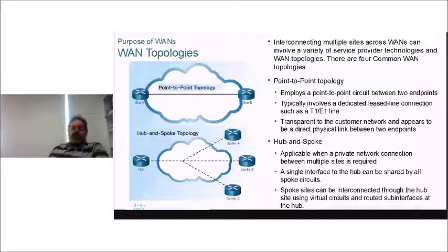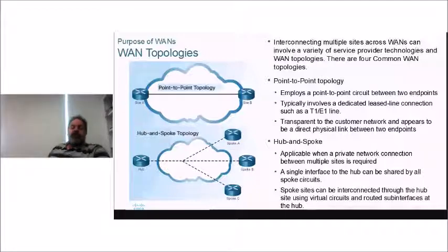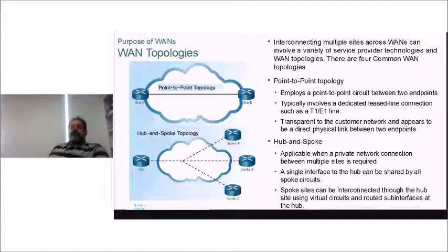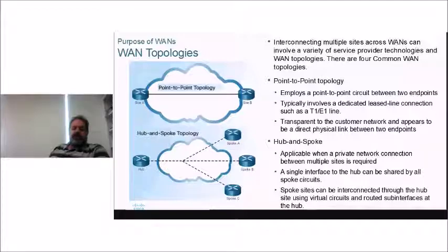We draw the cloud because it's all quite complex and we really don't need to know what the telco does in the middle. With hub and spoke topology, the hub is the central or main office and the spokes are all the other campuses. You could have point-to-point links from the main site to all other sites, but that requires a different physical connection for each site. Hub and spoke lets you use smarter setups like frame relay with a single physical link sharing virtual circuits.